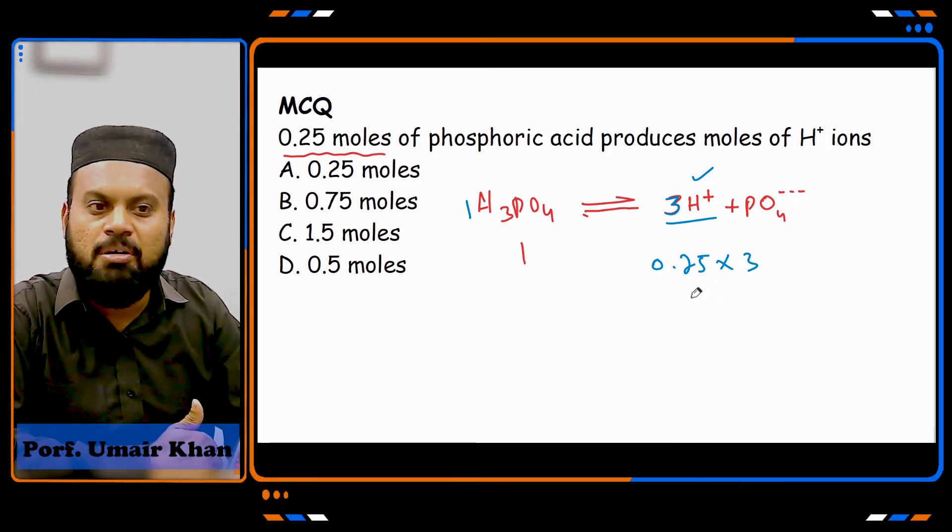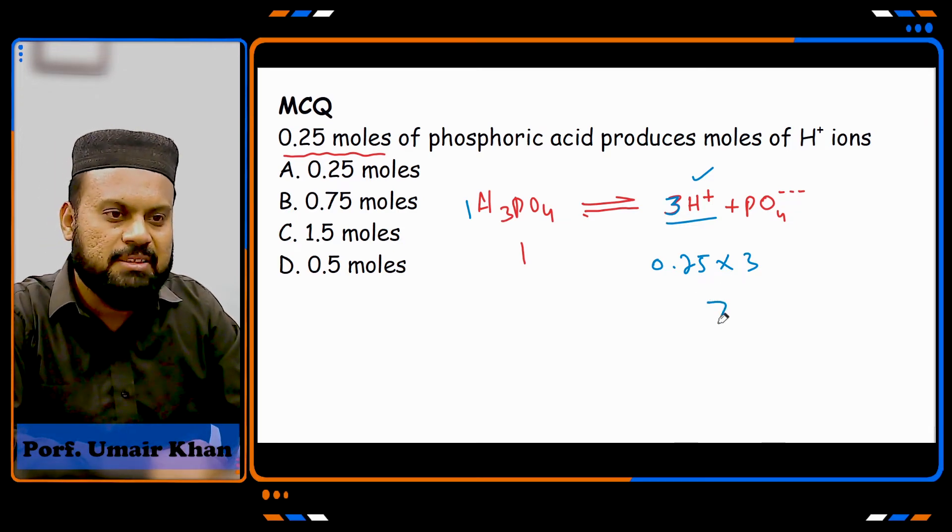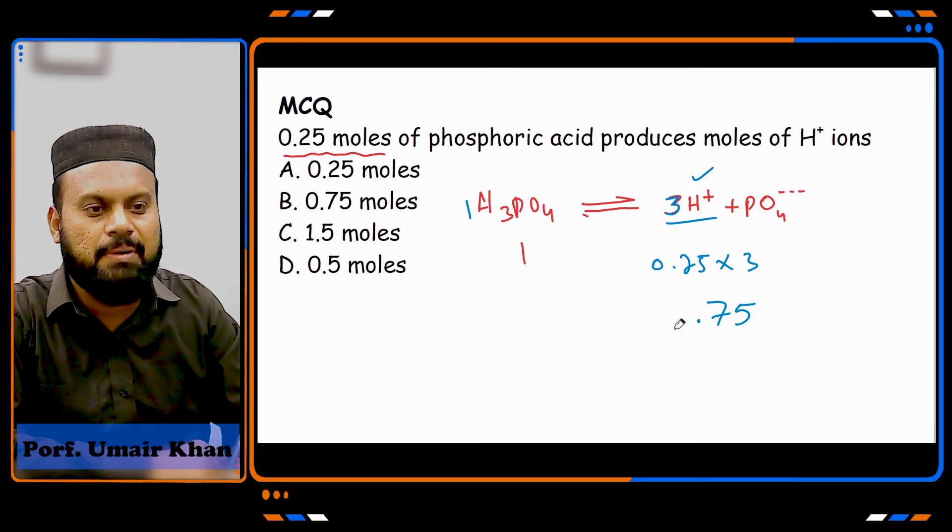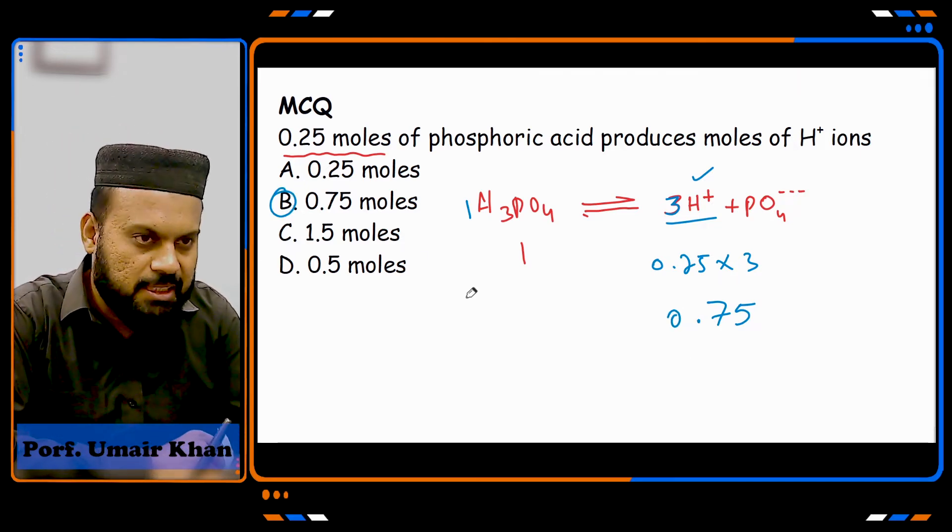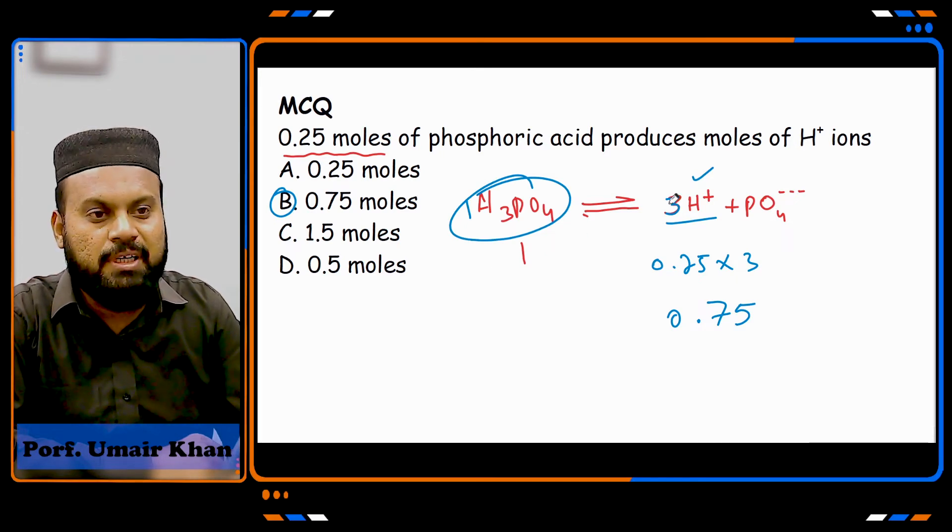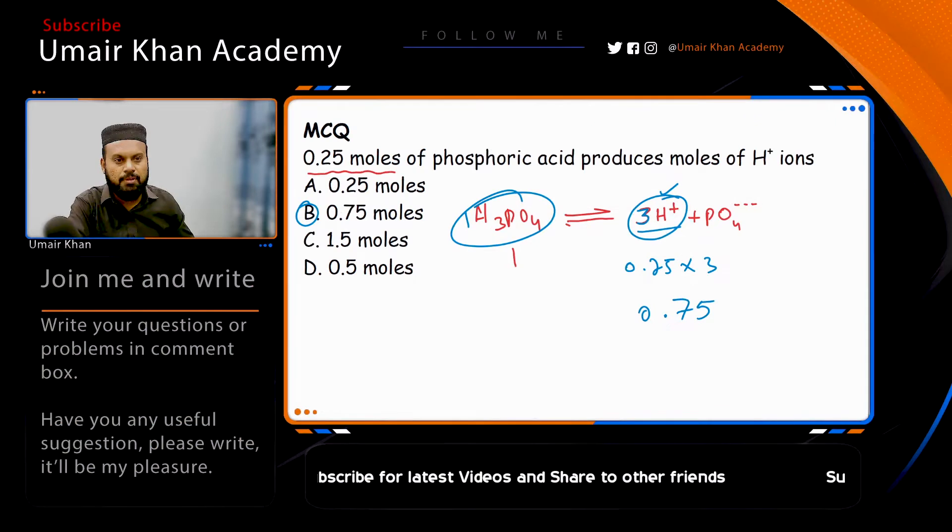So 0.25 times 3 is 0.75. If you have a point, you will get 0.75 as the answer. This is the answer, which is very easy. This means that the moles of phosphoric acid and the hydrogen ion will be 3 times more.